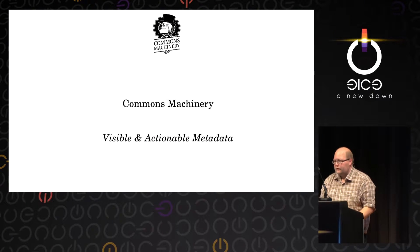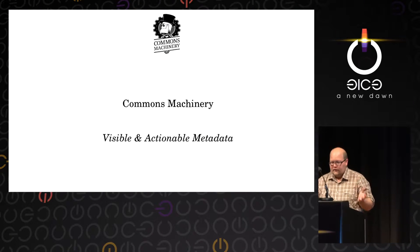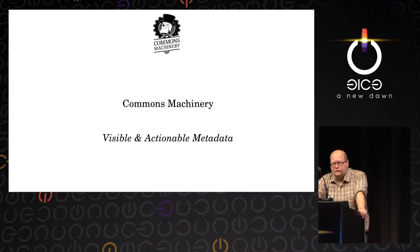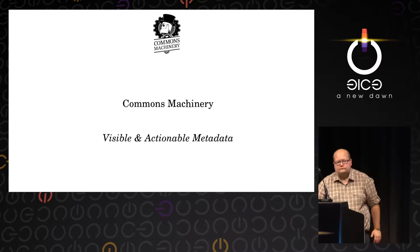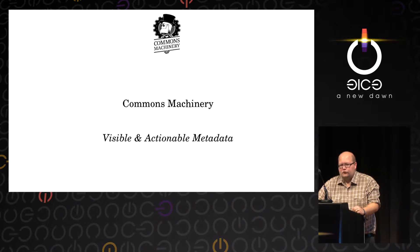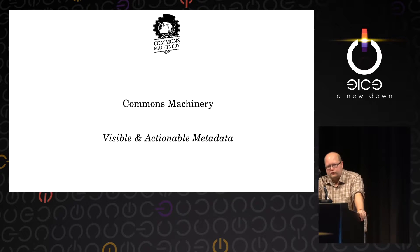Creative Commons licensing stipulates that whenever you reuse a work, you must attribute it in a manner reasonable for the medium where you're publishing it. But still, we see a large part of the commons not attributed when it gets shared around. So two years ago, I started working on a project called Commons Machinery, an organization that aims to make attribution information and metadata about creative works visible and actionable. Visible means we should actually be able to see the metadata connected to the works we're sharing.